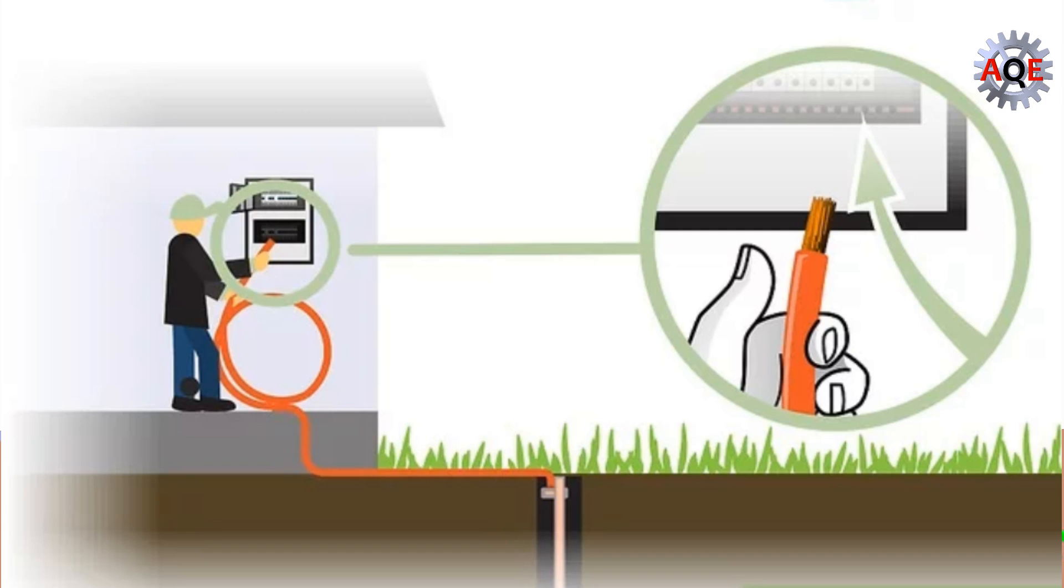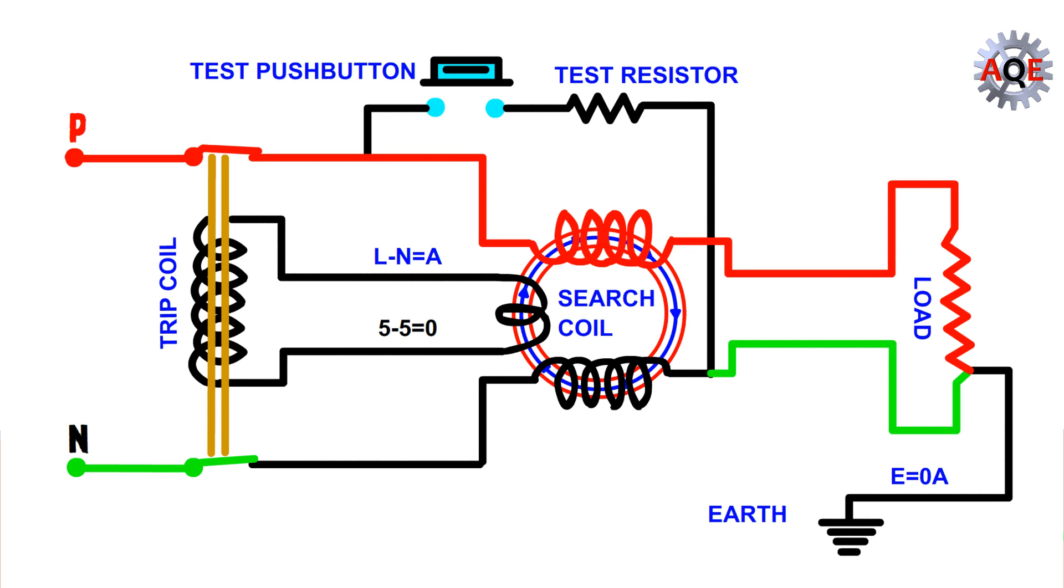Grounding gives electricity the most effective way to return to the ground via your electrical panel. A grounding wire gives an appliance or electrical device a safe way to discharge excess electricity. An electrical circuit relies on both positive and negative electricity.